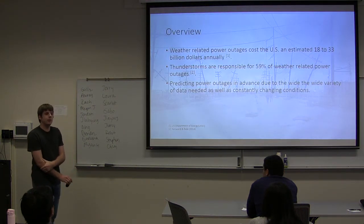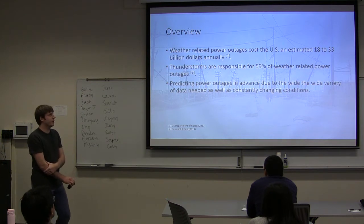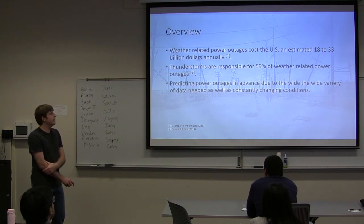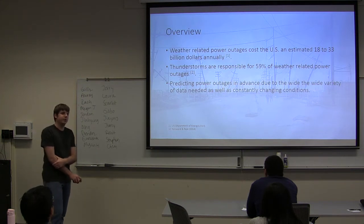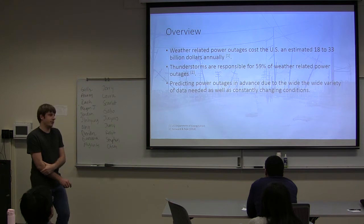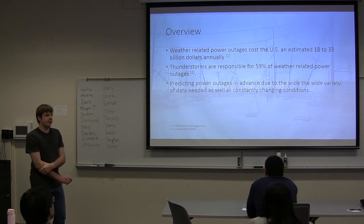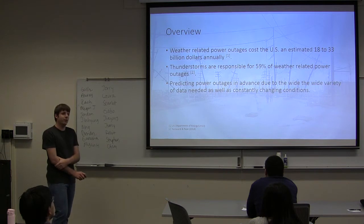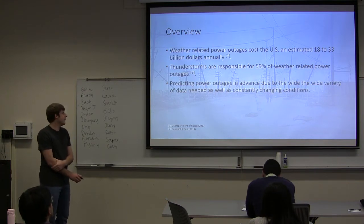Weather-related power outages are a significant economic impact in the U.S., and thunderstorms are actually responsible for 59% of weather-related outages. But predicting thunderstorm outages in advance is very difficult, and not much work has been done on it.